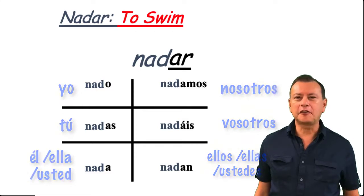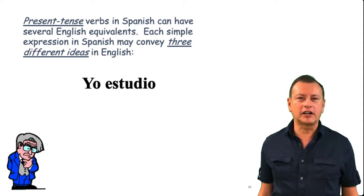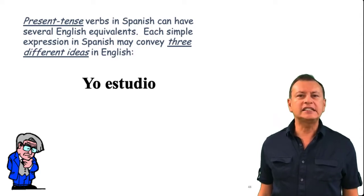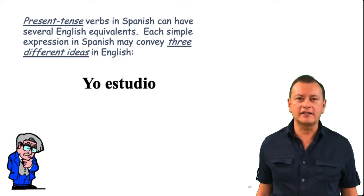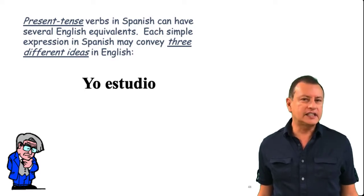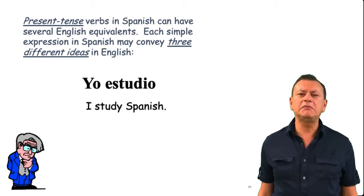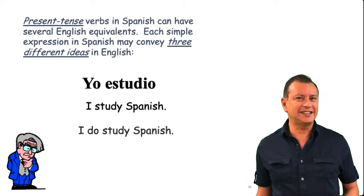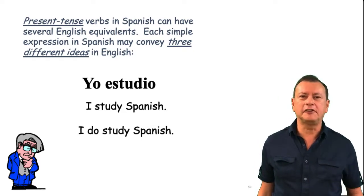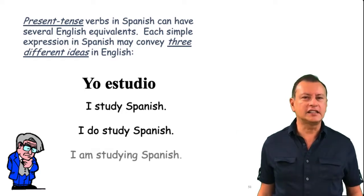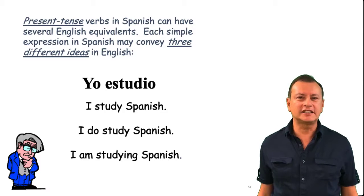Before we go to more verbs, remember the literal translation of this regular conjugation. The present tense in Spanish can be translated in English in three different ways. For example, yo estudio could mean I study, I do study — if you want to make emphasis — or sometimes it can be used as the progressive form: yo estoy estudiando, I am studying. Be very careful because it could be translated in these three different ways.